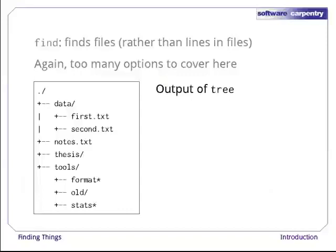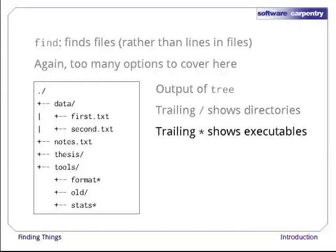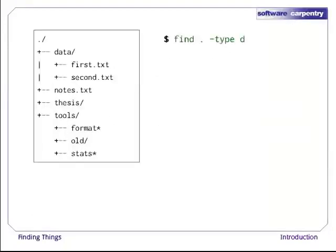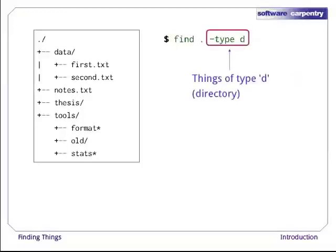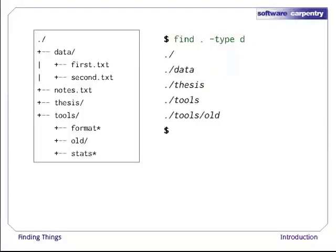Here's a textual representation of that same tree, created using the Unix tree command. As with ls -f, trailing slashes show directories and trailing stars show files we could run as programs. For our first command, let's run find . -type d. Here, dot is the root directory of our search — find will only look in it and the things it contains. -type d means things that are directories. Sure enough, find's output is the names of the five directories in our little tree, including dot, the current working directory.